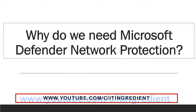You might be wondering why we need network protection to be configured. Network protection is an attack surface reduction capability in Windows 10 and it prevents users from accessing dangerous domains either through a browser or various other applications. Domains that host phishing scams, exploits, and other malicious content on the internet are always considered dangerous. Network protection capability is not limited to providing protection just for the web, but it extends the protection to the operating system level as well.